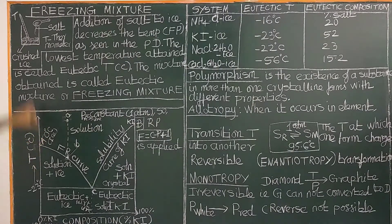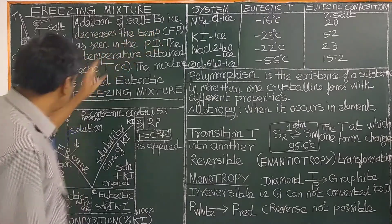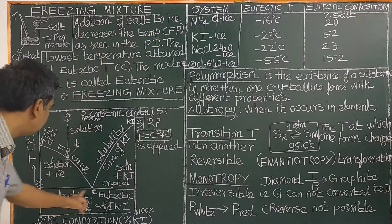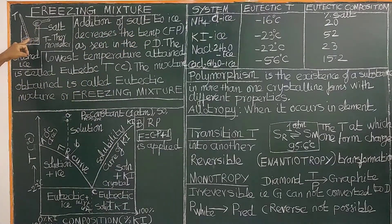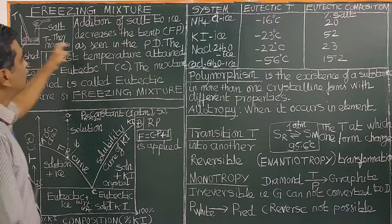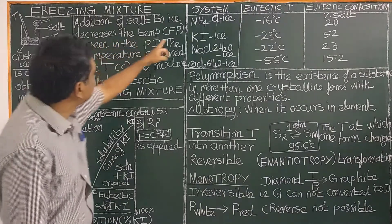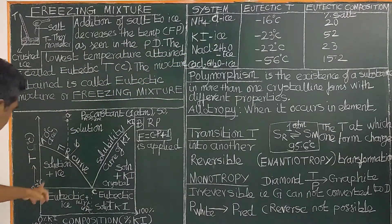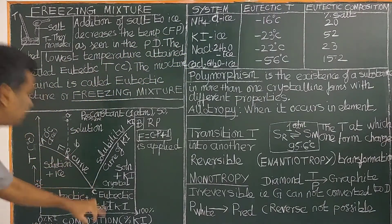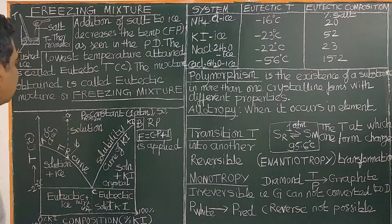It is the freezing point, 0 degrees Celsius. On addition of salt, increasing the concentration of salt by adding salt to ice decreases the temperature. The temperature falls down on adding salt to ice — it decreases the temperature and decreases the freezing point, as seen in the phase diagram of the potassium iodide-water system.